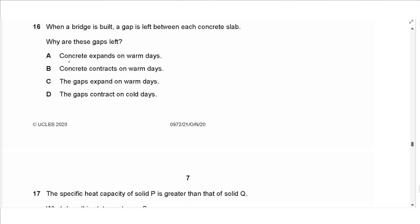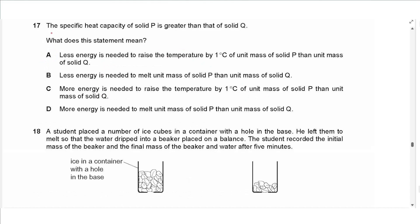Question 16 says: when a bridge is built, a gap is left between each concrete slab. Why are these gaps left? Concrete expands on warm days — yes, that is correct. Concrete contracts on warm days — no, it expands. The gaps expand on warm days and the gaps contract on warm days are both incorrect. So the answer is A.